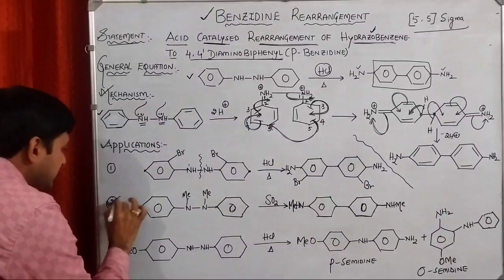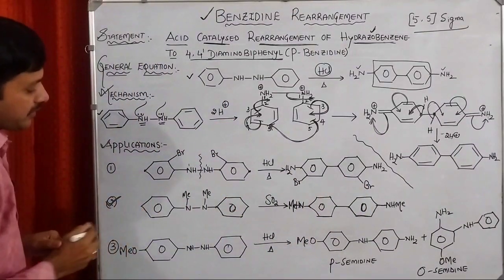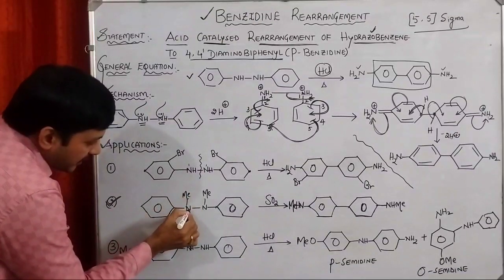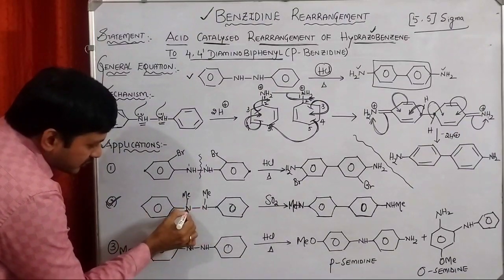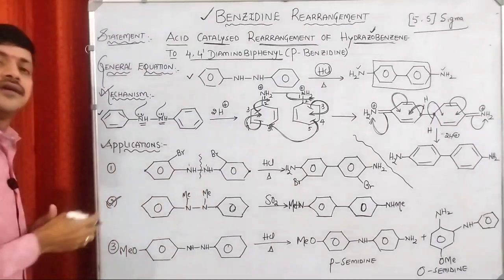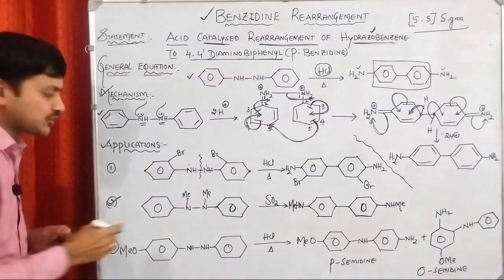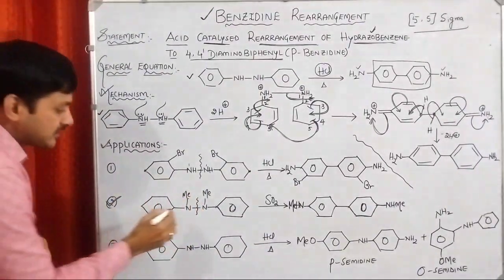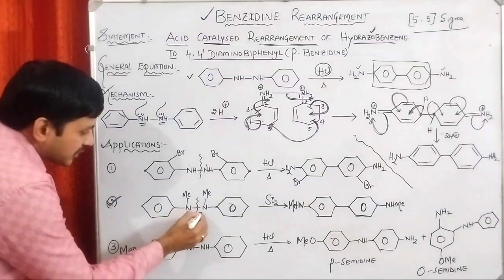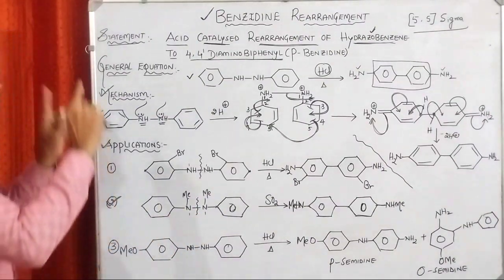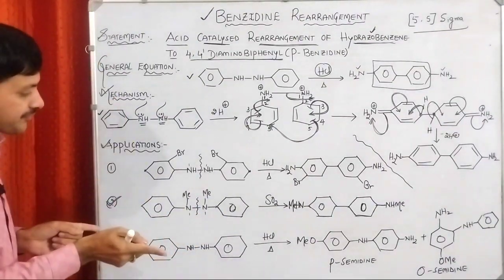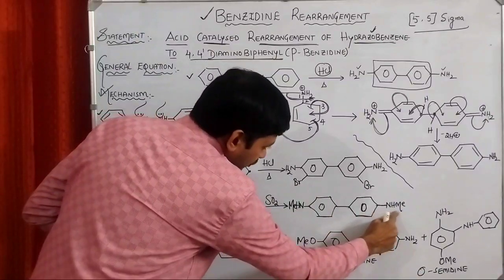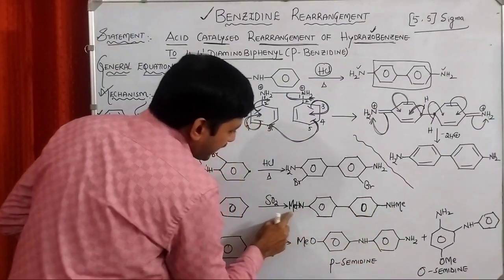Similarly, in the second example, the two nitrogen atoms carry methyl substitutions. A similar kind of situation takes place: cleavage of the 1,1-bond and formation of the 5,5-bond. We use the N-methyl substituted amine, yielding a substituted parabenzidine product.